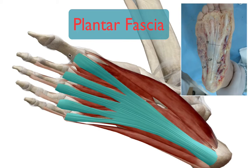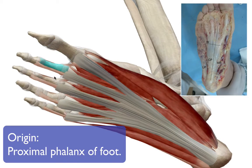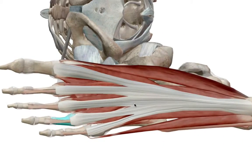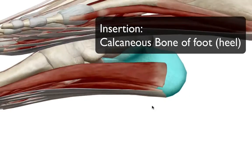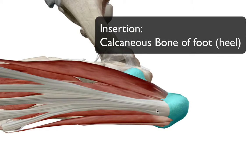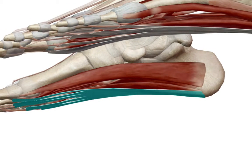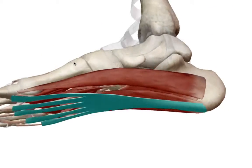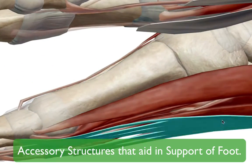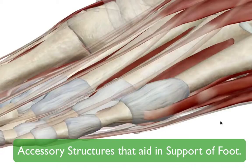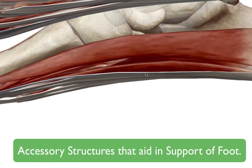Now the star of the video — the plantar fascia. The plantar fascia has its origin at the proximal ends of the phalanges of the toes, and its insertion is on the medial aspect of the calcaneus — your heel bone. The muscles mentioned, along with the plantar fascia and including your Achilles and other leg muscles, all work together to stabilize the foot and support what we call the arch of the foot.